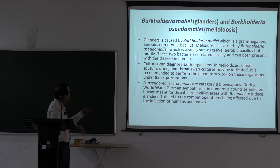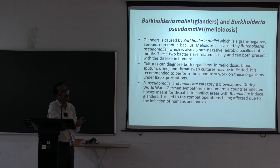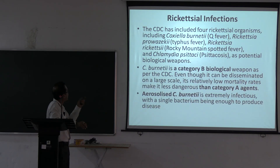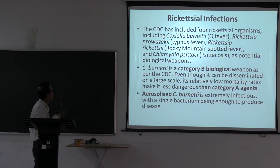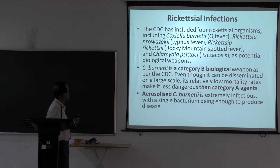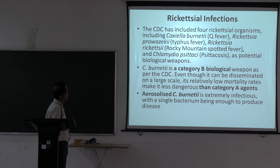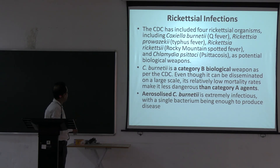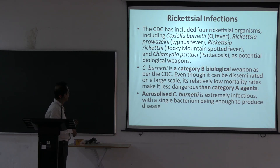During World War I, German sympathizers infected horses in numerous countries with Burkholderia mallei, causing glanders. Rickettsial agents — Coxiella burnetii, Rickettsia prowazekii, and Rickettsia rickettsii — are also bioweapon agents. Coxiella burnetii is Category B; it can be disseminated on a large scale but has a low mortality rate. Aerosolized Coxiella burnetii is extremely infectious.